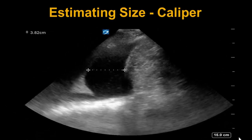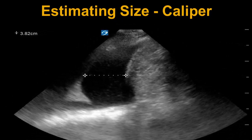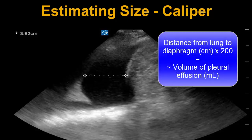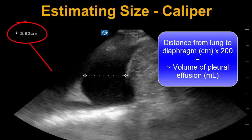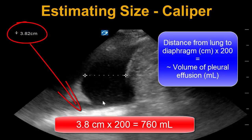Apart from the qualitative eyeball method used to estimate the size of a pleural effusion, it is also possible to estimate its size quantitatively using a simple calculation. The volume of a pleural effusion is equal to 200 mL/cm multiplied by the caliper distance between the inferior edge of the lung and the superior edge of the diaphragm in centimeters. So, in the case above, it would be 3.82 cm multiplied by 200 mL/cm, giving a total estimated volume of 760 milliliters.